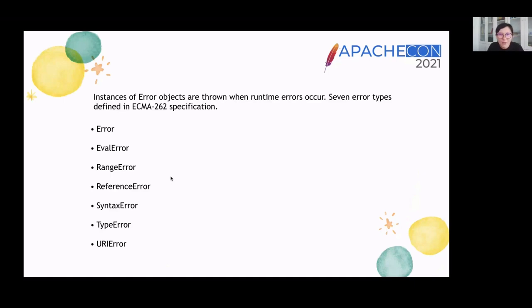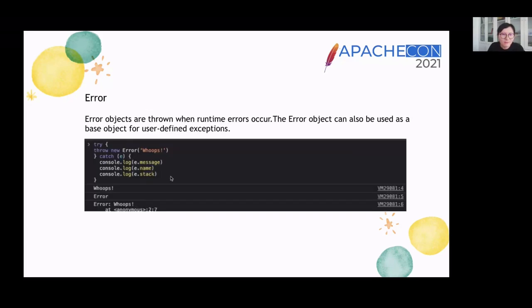Instances of error objects are thrown when runtime errors occur. Seven error types are defined in ECMAScript specification. The errors are: Error, EvalError, RangeError, ReferenceError, SyntaxError, TypeError, and URIError. Let's see all the types in detail. The Error object is thrown when runtime errors occur and can also be used as a base object for user-defined exceptions. Other errors inherit from this type — in other words, Error is the base class for all errors.